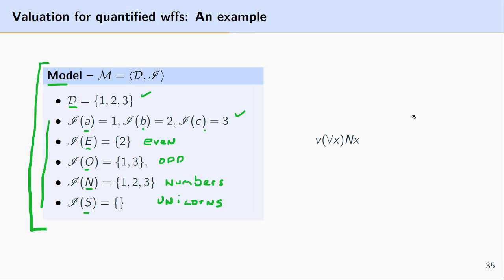Next, let's look at AXNX — the universally quantified XNX. This says that every item in the model is in the interpretation of N. When we look at the domain, we see it consists of numbers one, two, and three. When we look at the interpretation of N, we see it also consists of numbers one, two, and three. So every item in the domain is in the interpretation of N, and the valuation of AXNX is true.